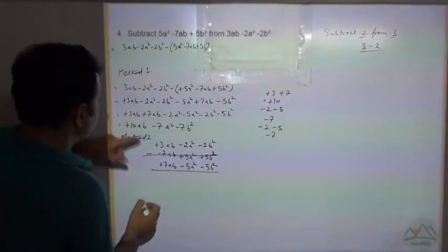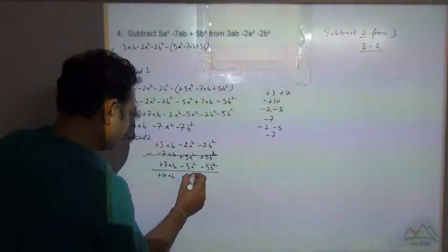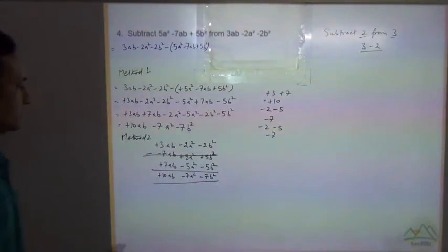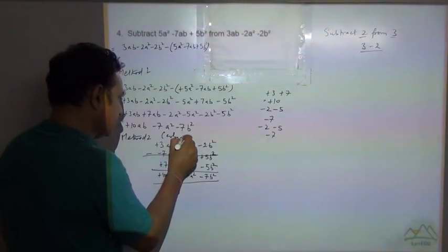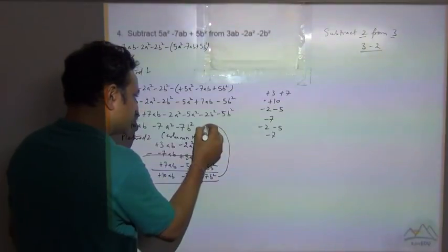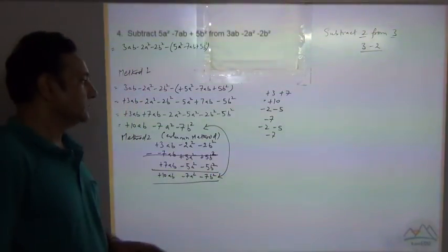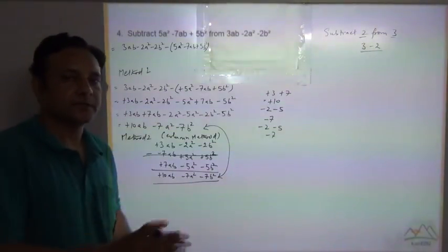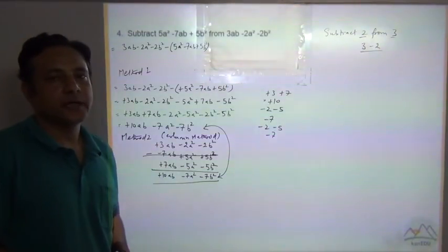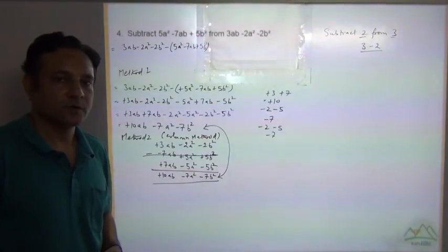Now add the columns: plus 10ab, minus 7a², minus 7b². Method 2, the column method, gives the same answer. Unless you are told to solve by a specific method, you can use any method as per your convenience. If a specific method is required, then use that one.